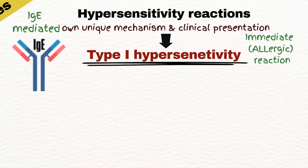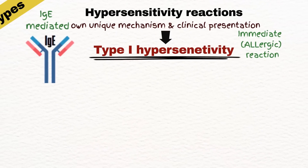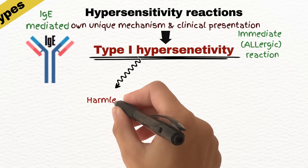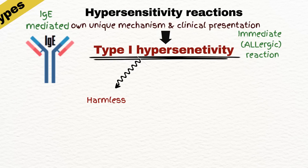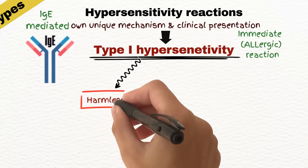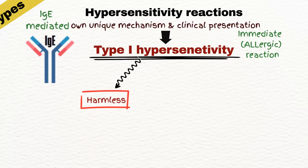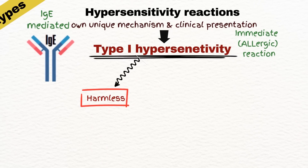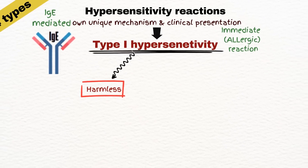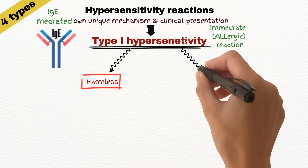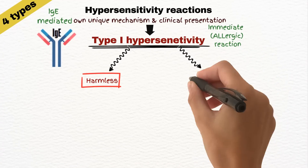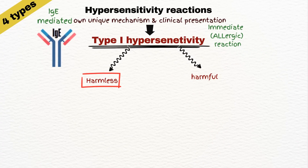Type 1 hypersensitivity reaction is a body reaction to a harmless substance. Normally, when the immune system encounters a substance, it determines whether it is harmful, such as a pathogen, or harmless.